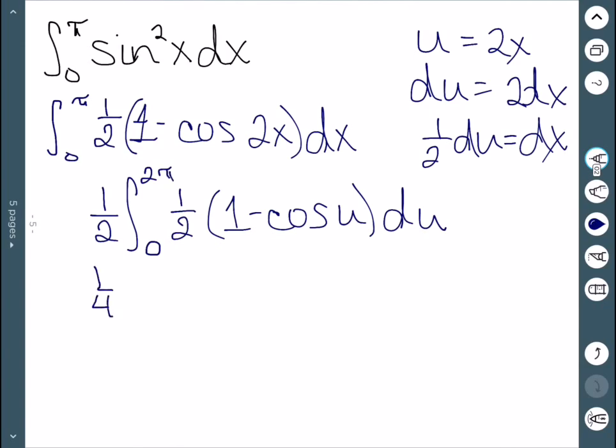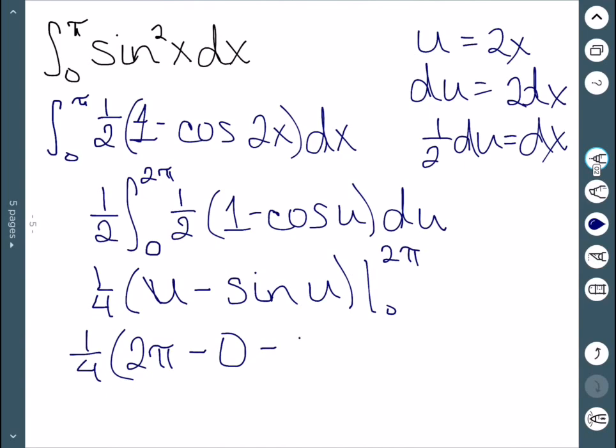So this is 1 over 4. The integral of 1 is u. The integral of cosine is sine. And this should be going between 0 and 2 pi. So we have 1 over 4 times 2 pi minus sine of 2 pi, which is 0, minus 0, which would just be pi over 2.